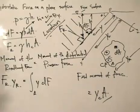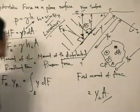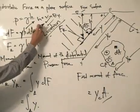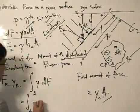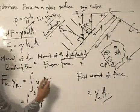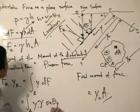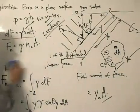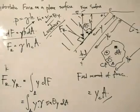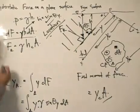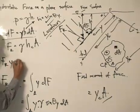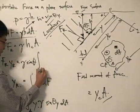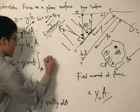Substituting h = sinθ · y, this equals the integral over area A of y times dF, where dF is substituted as specific weight · h · dA = specific weight · sinθ · y · dA. So the integrand becomes specific weight · sinθ · y² · dA. Then Fr · y_r equals the specific weight and sinθ brought out as constants, multiplied by the integral of y² dA.